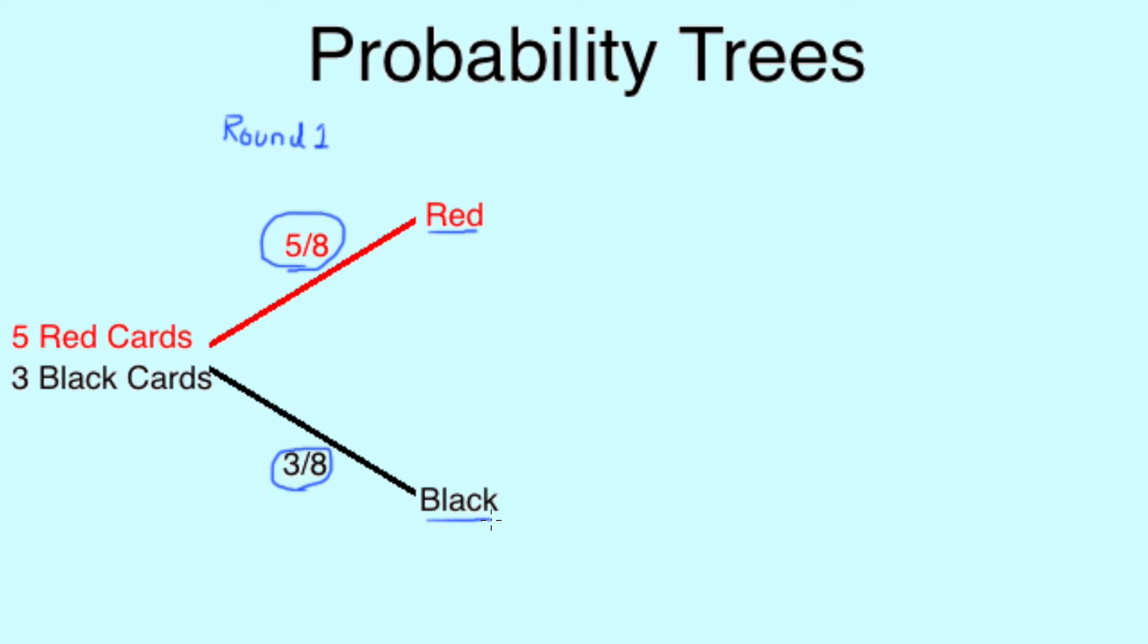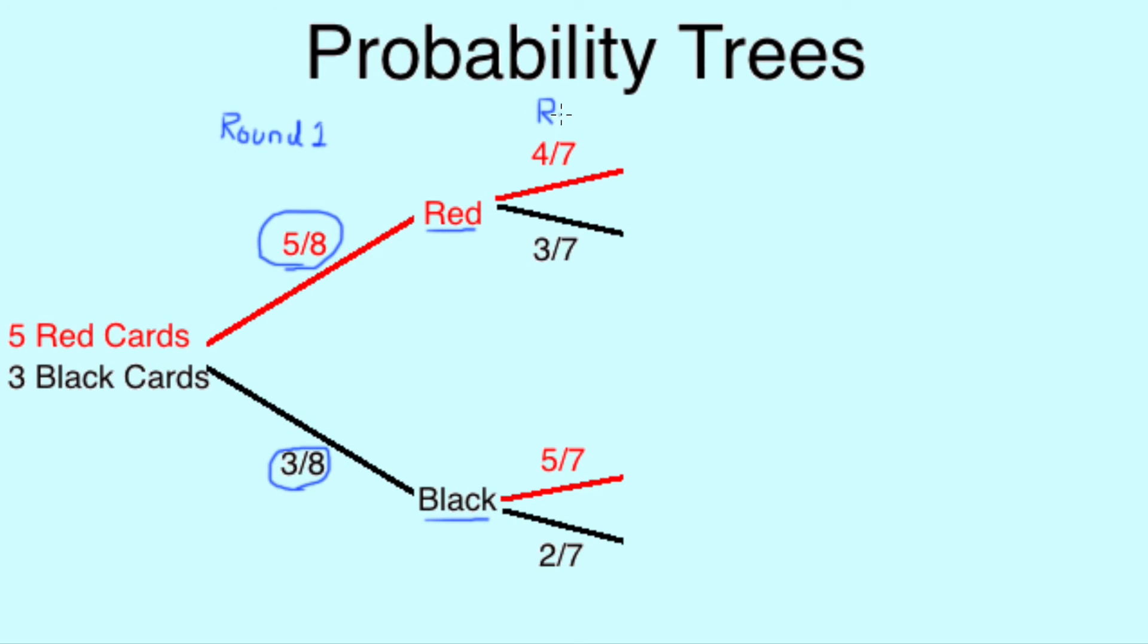After choosing a red, we then have fewer cards in the deck left to choose from, and 1 less red, so our new chance of picking a red here is 4 out of 7, and because there are still 3 black cards in the deck, then the chances of picking a black card are now 3 out of 7.